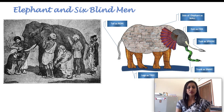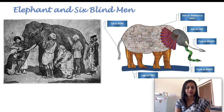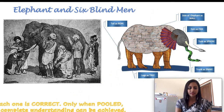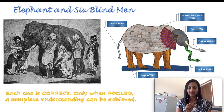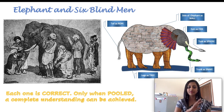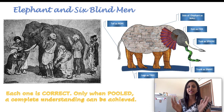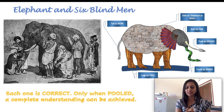Are they all wrong? Definitely no. Each one is correct in its own way. The key notion is that when everything is pulled together and combined, the understanding that it is an elephant can be arrived at.